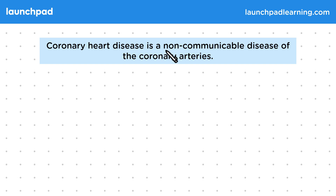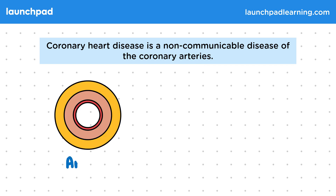Coronary heart disease is a non-communicable disease of the coronary arteries. It's a type of cardiovascular disease because it affects the circulatory system. This diagram shows an artery — remember, arteries carry blood at high pressure from the heart to the organs.